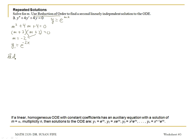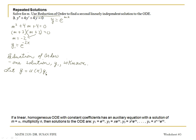You can use reduction of order when you know one solution and you're looking for a second. One solution is known, and we write the substitution as y equals u times y1. For our specific example, our y1 is e to the negative 2x.